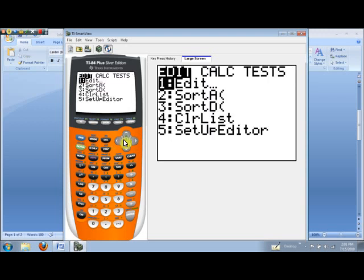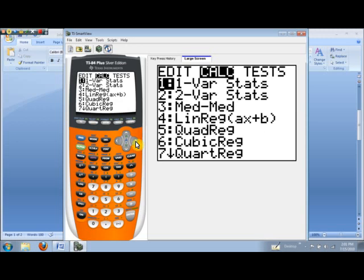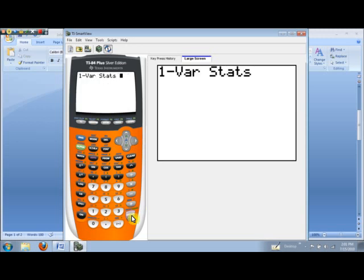And now we want the one variable statistics on list three. So to do that, we'll hit the second key and then number three to get list three, and then hit enter.